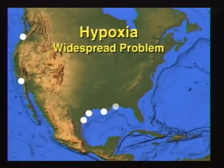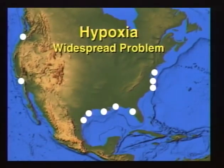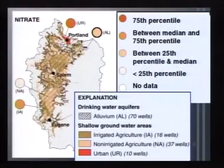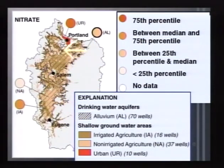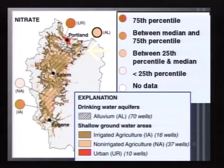The Gulf of Mexico is not the only place in the United States with hypoxia or low dissolved oxygen. All of our coastlines — from the East Coast to the Gulf of Mexico to the West Coast — have areas of widespread low dissolved oxygen related to land use activities. In Oregon, for example, in the Willamette Basin, nitrate concentrations in groundwater are extremely high. The Willamette River flows north toward Portland into the Columbia River and then to the Pacific Ocean. Some of the highest nitrate concentrations are observed near Portland in areas with high cropland production and high fertilizer use.